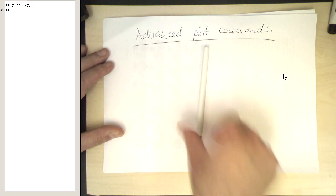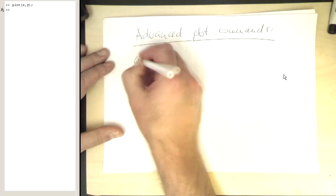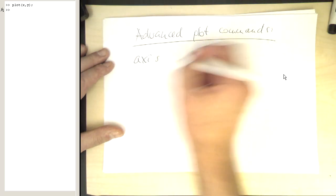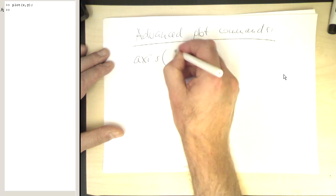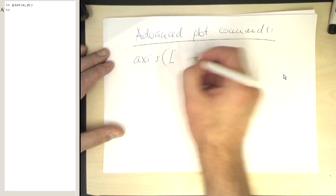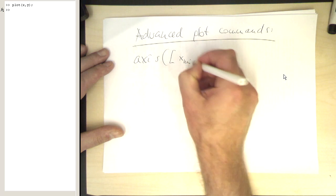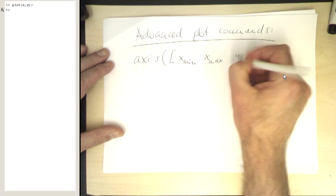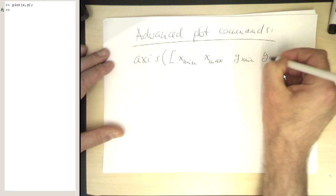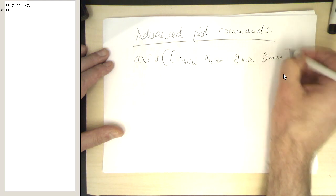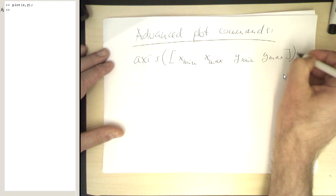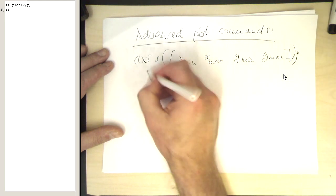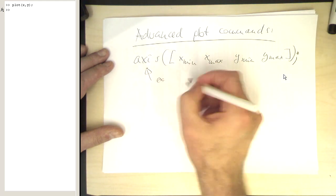For this purpose MATLAB has a very simple command and this is called axis. And so the argument is a vector which is x min and then we've got x max and we've got y min